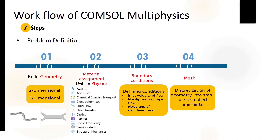If you fully define your problem, you move to step number four: meshing. Meshing is basically the discretization of your geometry into small pieces called elements. In COMSOL, there are two ways to mesh: physics-controlled mesh or a user-defined mesh. As an example, you can see a two-dimensional microfluidic channel that we discretize into a small number of elements.